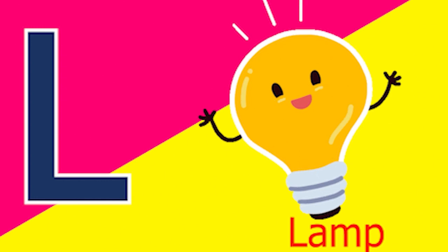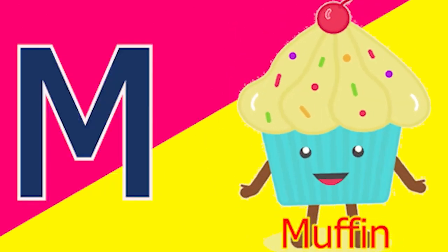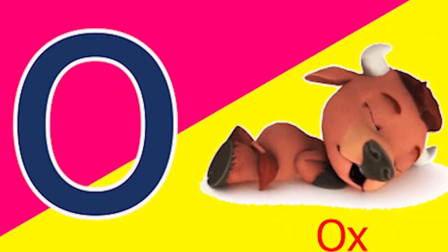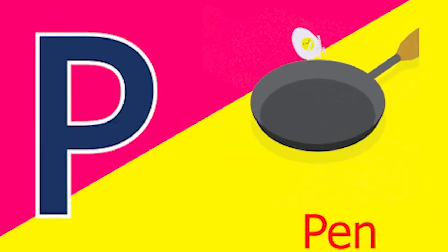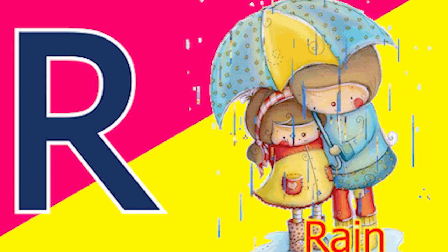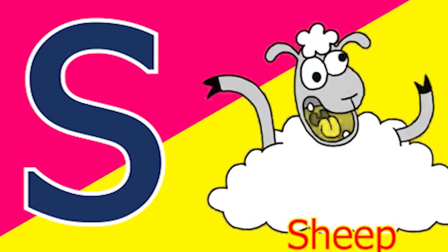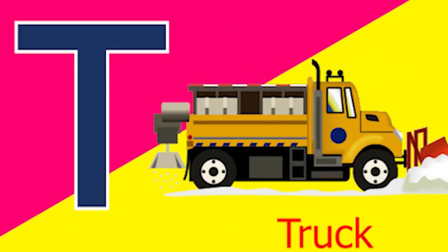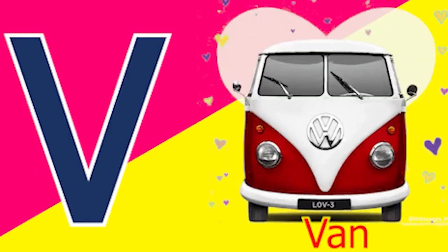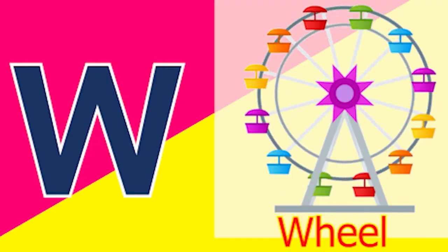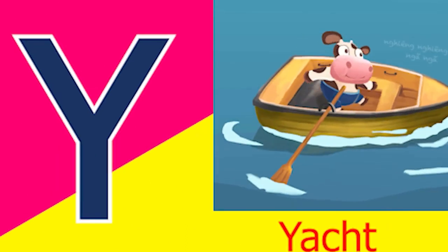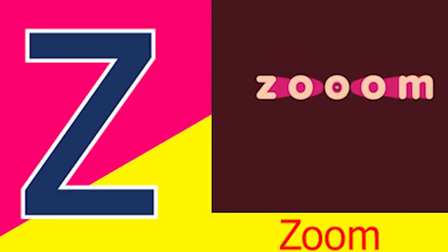L for lamb, M for mud, N for nose, O for ox, P for pan, Q for quack, R for rain, S for sheep, T for tap, U for utensil, V for van, W for wheel, X for xylophone, Y for yacht, and Z for zoom.